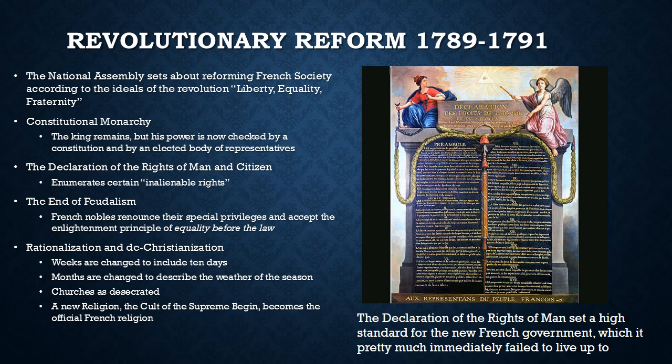The names of the months were also changed to describe the weather of the season. For example, August and September became known as Fructidor — the month in which fruits ripen and are harvested. Thermidor became the new name for July because that is the hottest month — thermidor, thermometer, you get the connection. Finally, they tried to remove Christianity from its central place in French society. They began desecrating churches, destroying religious artwork, and they supported a new religion called the Cult of the Supreme Being, which became the official French religion in this period.